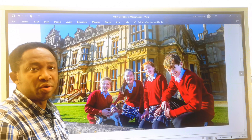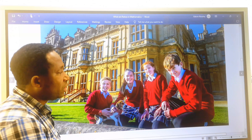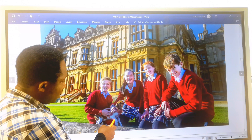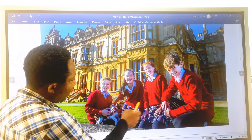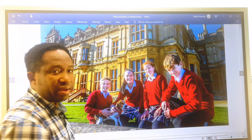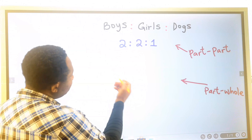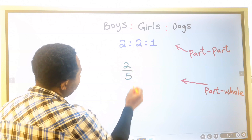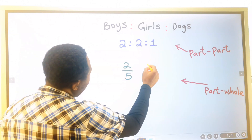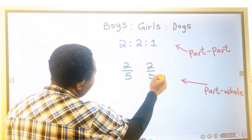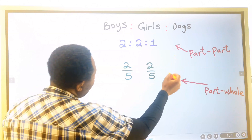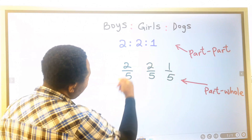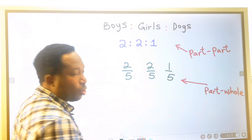For a part-to-whole ratio, we count the total population: one, two, three, four, and five. For the boys, part-to-whole is going to be two to five. For the girls, it will be two to five. And for the dog, it's going to be one to five. This is a representation of part-to-whole.